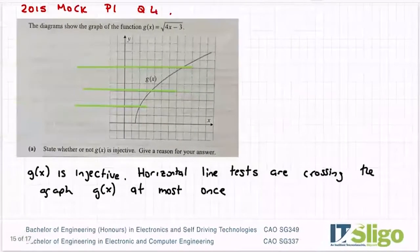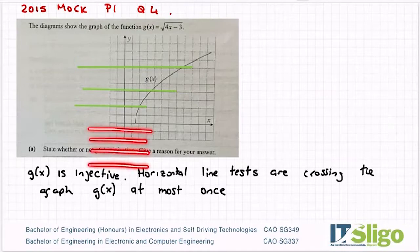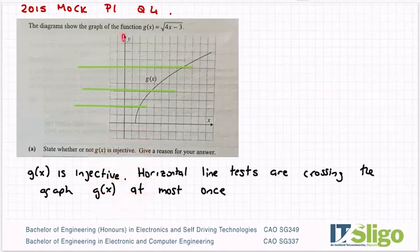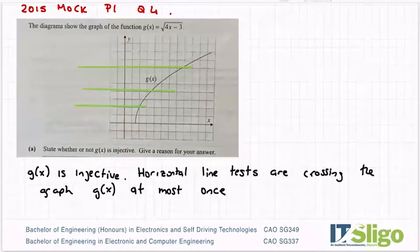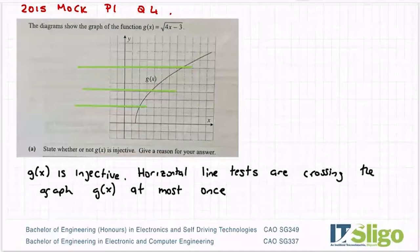Surjective means all outputs are used, or all outputs have an input value. When I come back to here, have all outputs got an input value? Well no, there's loads of horizontal line tests I could do down here and they never touch the graph. Those outputs do not have an input, so that is why this graph isn't at this minute in time surjective.